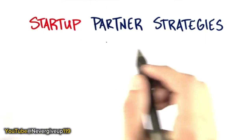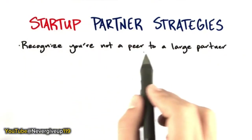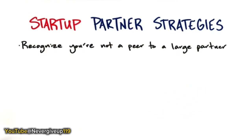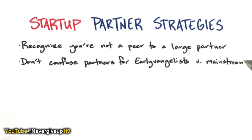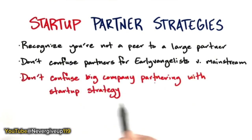In summary, partnering strategies are great. But understand you're not a peer of these large companies — all the books and literature that talk about partnerships very rarely address startup-to-large-company partnerships. These are asymmetrical relationships. Don't confuse the partners you need early on to address early evangelists with the ones you might need a year or two from now to address mainstream customers. Don't confuse big company partnering with startup strategy.